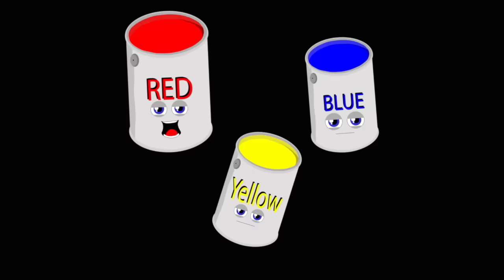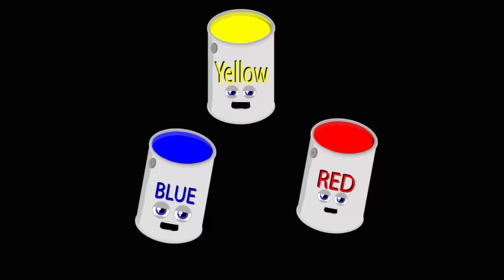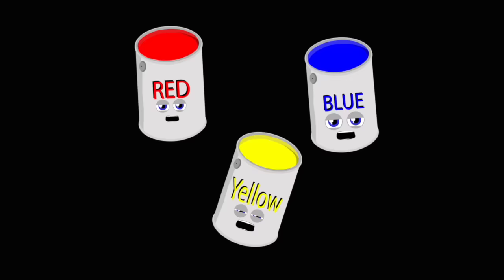We are the primary colors: red, yellow and blue. When you mix us together, we turn a color that's new.